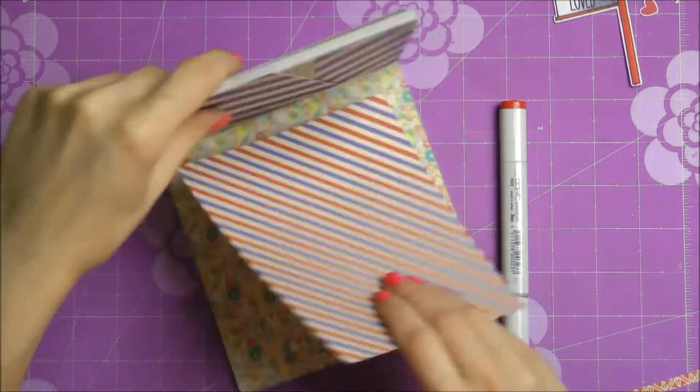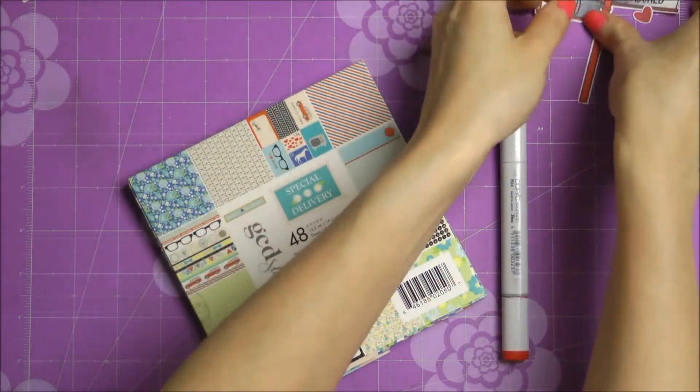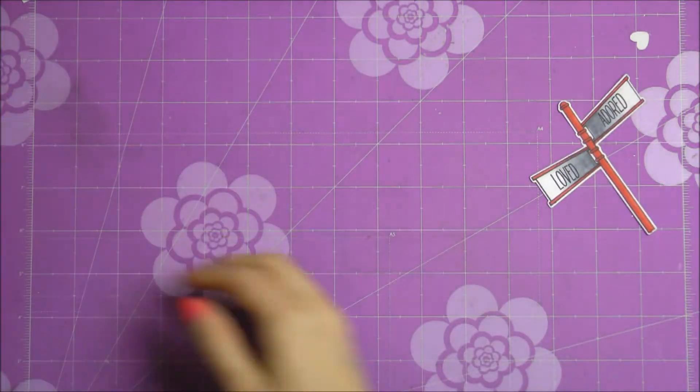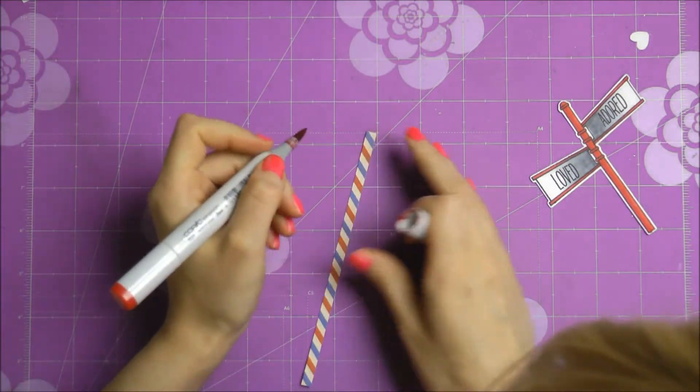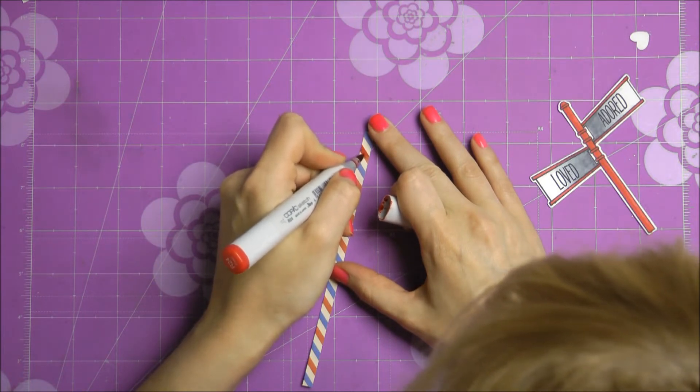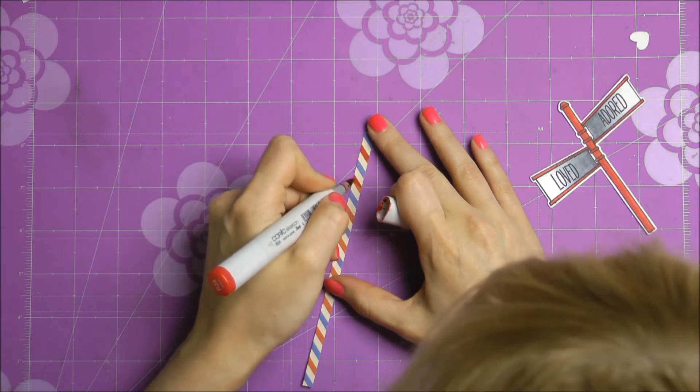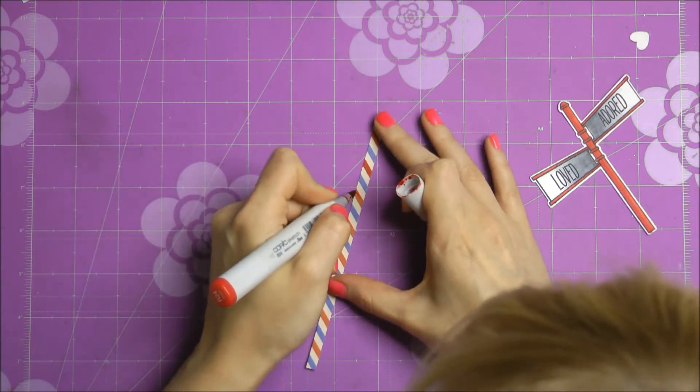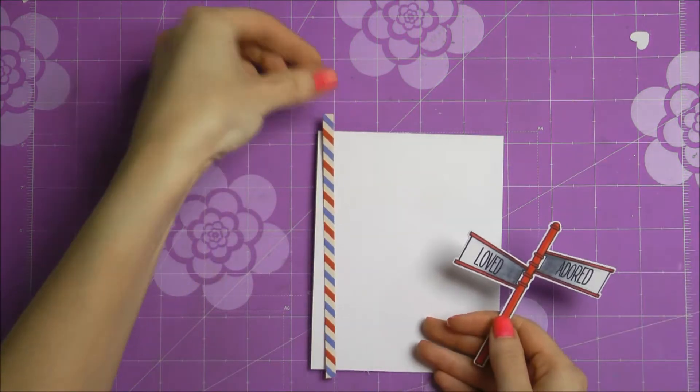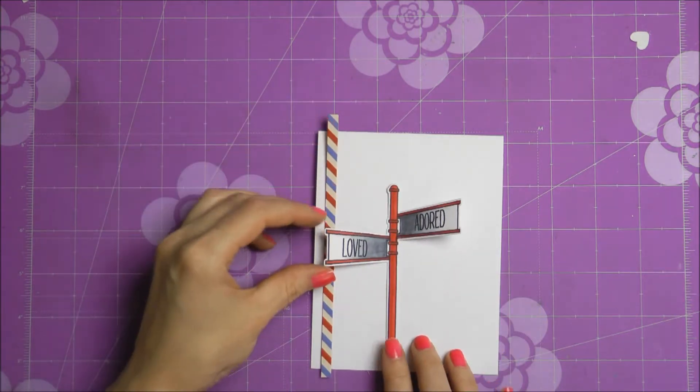Now to continue my card I'm going to be using a strip of paper from this special delivery paper pad from GCD Studios. I really liked this sort of like a postal love theme and I thought that this particular pattern would go well with my design. Now because the red on this paper wasn't intense enough I'm using my red Copic marker and I'm adding just a little bit of more red color to that paper just to make sure that it matches my colored street sign.